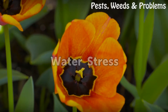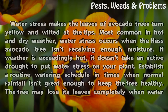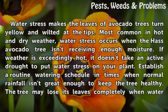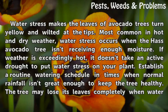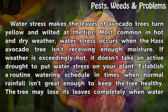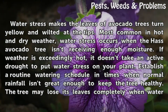Water stress makes the leaves of avocado trees turn yellow and wilted at the tips. Most common in hot and dry weather, water stress occurs when the Hass avocado tree isn't receiving enough moisture. If weather is exceedingly hot, it doesn't take an active drought to put water stress on your plant.